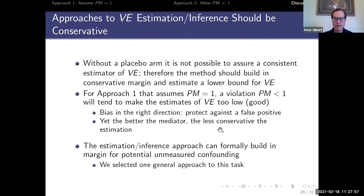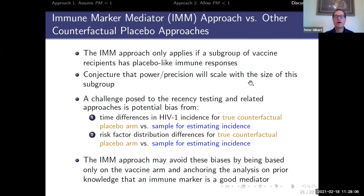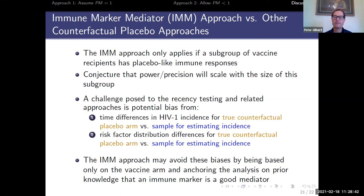How does this immune marker mediator approach compare to other counterfactual placebo approaches? First, it only applies if there's a subgroup of vaccine recipients with placebo-like immune responses, since the estimation is anchored on that subgroup, so there are some settings where it can't be used. Power and precision will likely scale with the size of that subgroup, and other methods like what Faye's going to talk about with recency approaches might tend to have more power. I'm not suggesting this should replace other methods — I'm thinking it should be done alongside them, and in the future we can think about synthesizing methods that simultaneously use recency testing or other approaches combined with immune marker mediators.